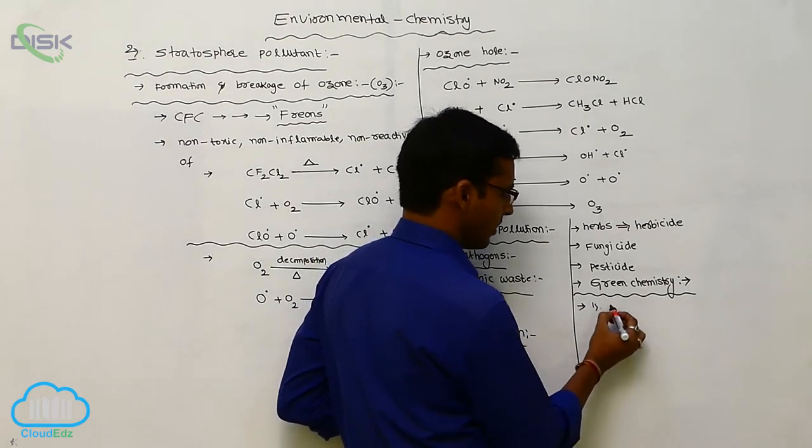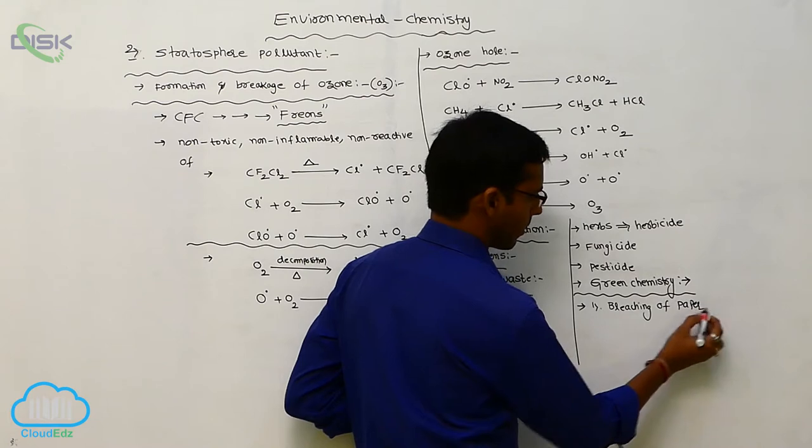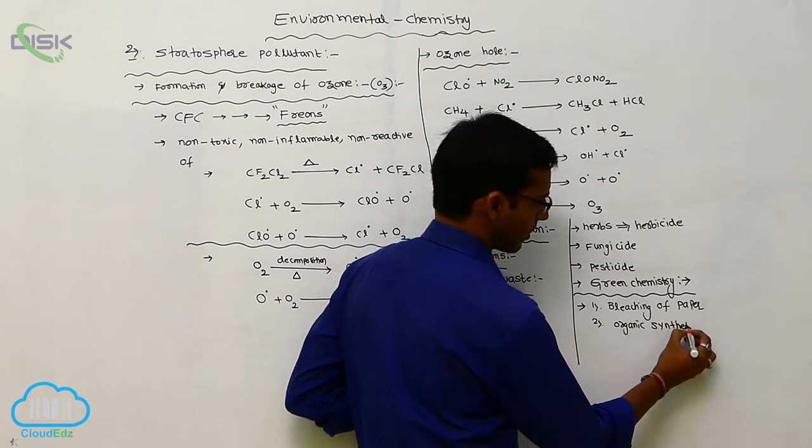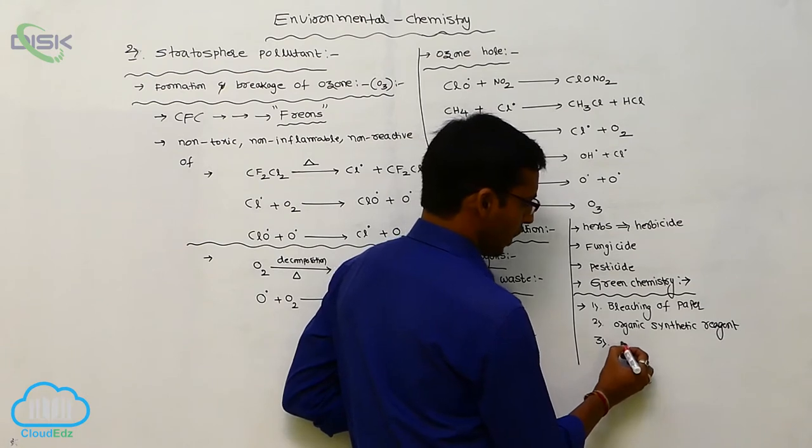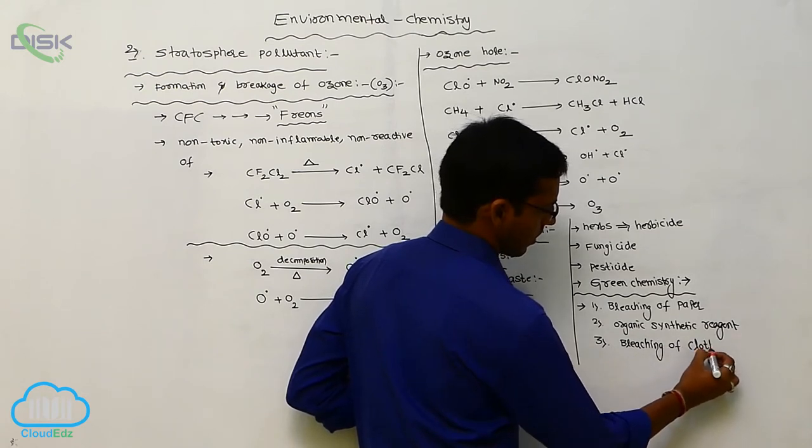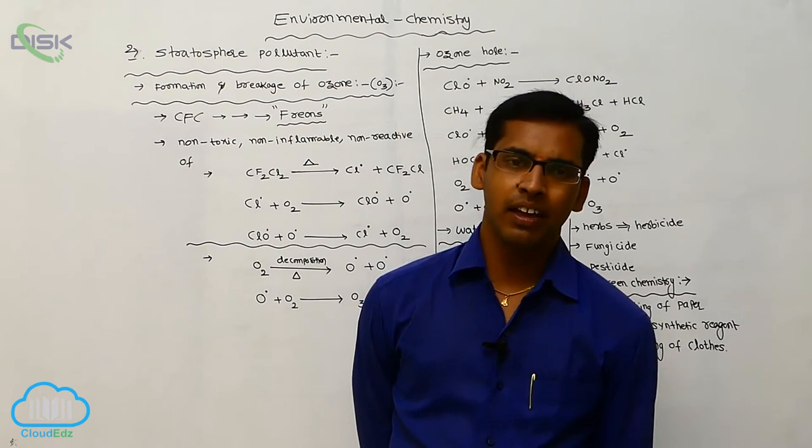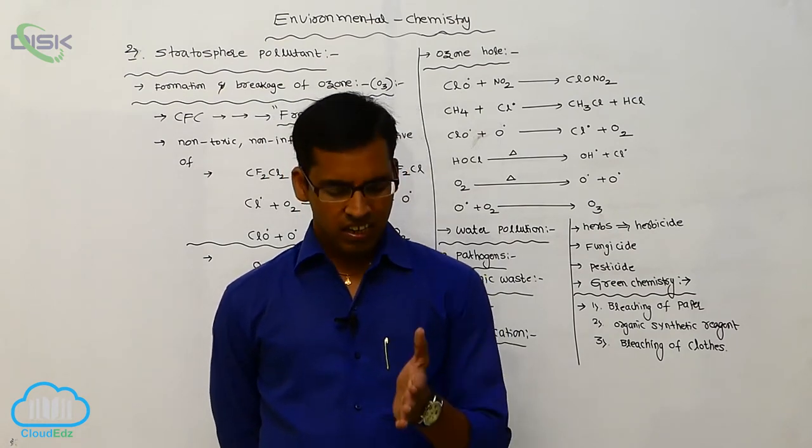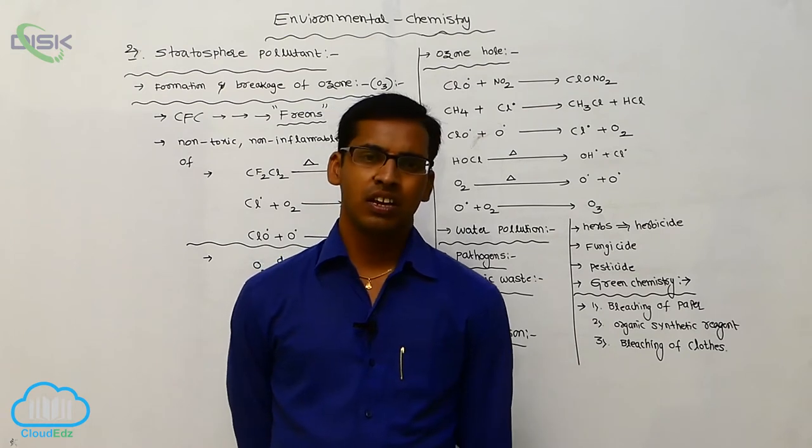This green chemistry acts as one is bleaching, bleaching of paper or organic purpose, organic synthetic reagent, and next one is bleaching of cloths. So bleaching of paper, that paper is bleached or cleaned by using different types of organic solvents like hydrogen peroxide. This chlorine gas is passed through calcium hydroxide. It produces a bleaching agent.